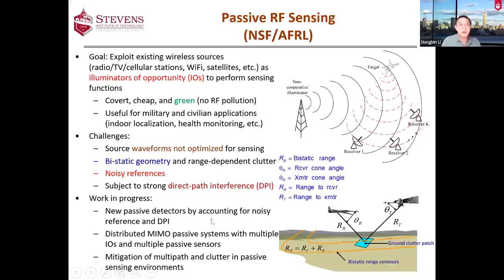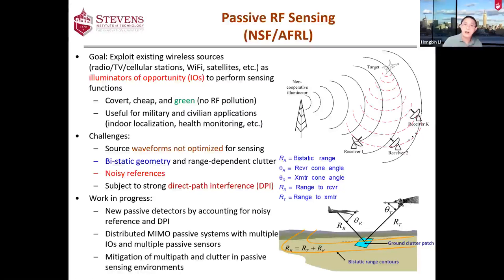These are some of the things we are doing that particularly target the challenges I mentioned: developing new signal processing techniques for detection that take into account the noisy reference and the DPI. We're also looking into distributed multi-static passive systems, because you can simultaneously access multiple sources rather than a single source for sensing functions. Mitigation of multi-paths and clutter in passive sensing environments is also one of the things we've been working on in the last few years.